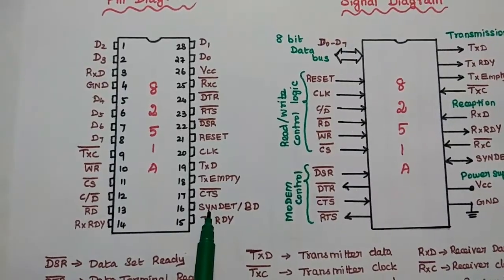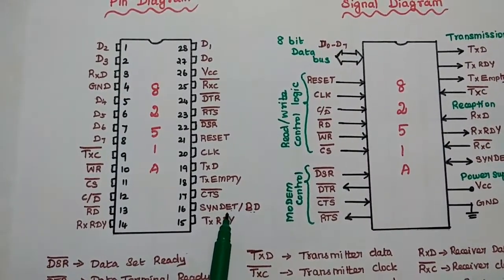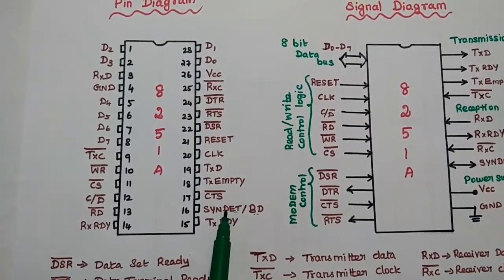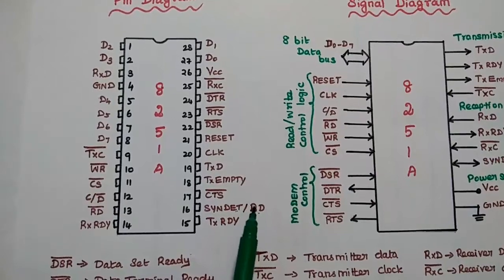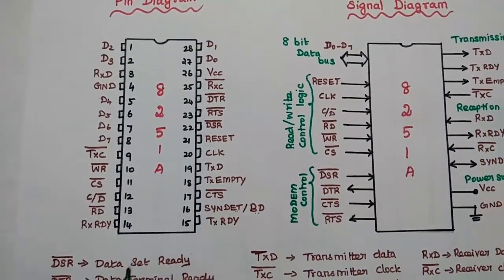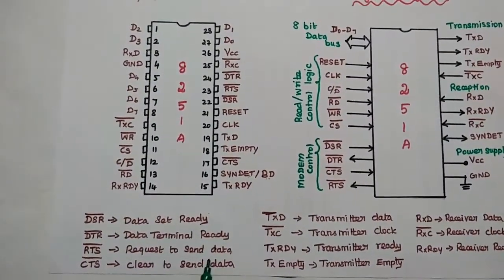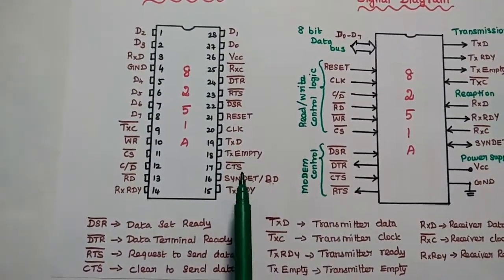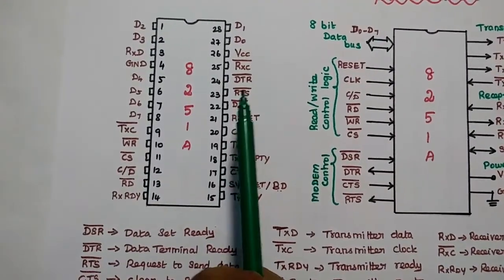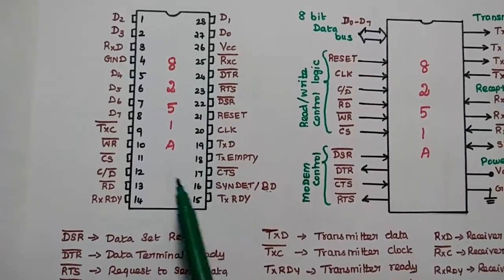The next pin is sync detect or break detect, which is used on the receiver side. CTS means clear to send data. The four signals CTS, DSR, RTS, and DTR are used for modem-related operations.